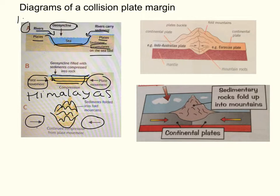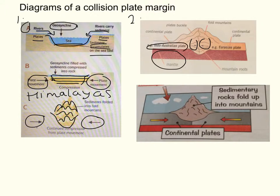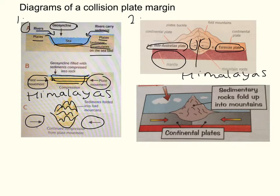Another way of showing this is diagram 2. Here we have the mantle labeled to show that convection currents are causing the plates to move, with two clear arrows showing the direction the plates are moving in. We have a named example of the Eurasian plate and the Indo-Australian plate. These two plates and their movement form the Himalayas, represented as the mountain range in the middle. The squiggly lines show that the mountains are folded, and the plates are clearly labeled as continental.